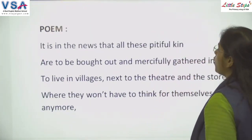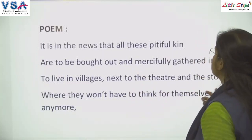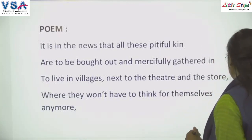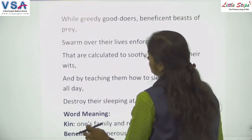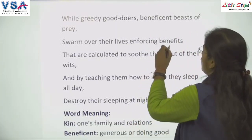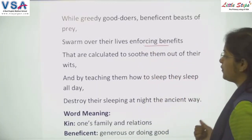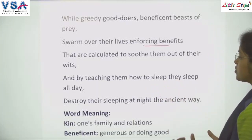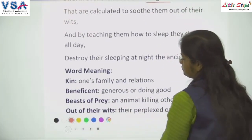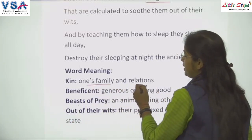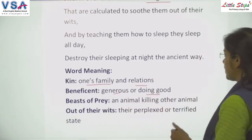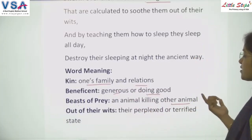It is in the news that all these pitiful kin are to be bought out and mercifully gathered into live-in villages next to the theatre and the store, where they won't have to think for themselves anymore. While greedy good-doers, beneficent beasts of prey, swarm over their lives enforcing benefits that are calculated to soothe them out of their wits, and by teaching them how to sleep — they sleep all day — destroy their sleeping at night the ancient way. Here 'kin' means one's family and relations; 'beneficent' means generous or doing good; 'beast of prey' means an animal killing or hunting other animals; 'out of their wits' means a perplexed or terrified state.